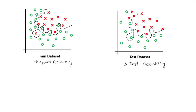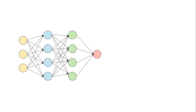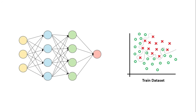This condition is called the overfitting condition. What we ideally want is a smooth curve that can fit well both in the training data set as well as in the test data set. To do this, we use regularization.